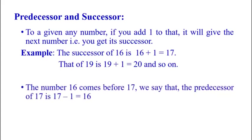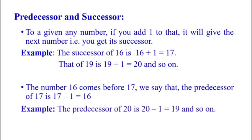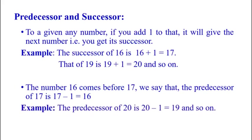The number 16 comes before 17. We say that the predecessor of 17 is 17 minus 1, that is equal to 16. For example, the predecessor of 20 is 20 minus 1, equal to 19, and so on.